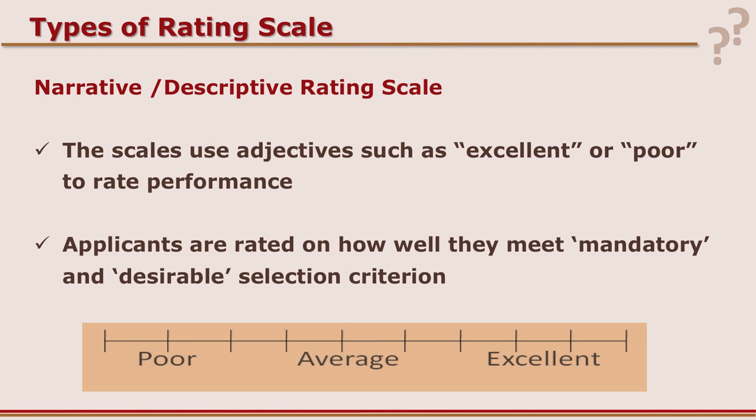With the narrative or descriptive scale, applicants or respondents are rated on how well they meet mandatory or desirable selection criteria. The continuum has many sub-categories under poor, under average, and under excellent, and raters must rate accordingly.